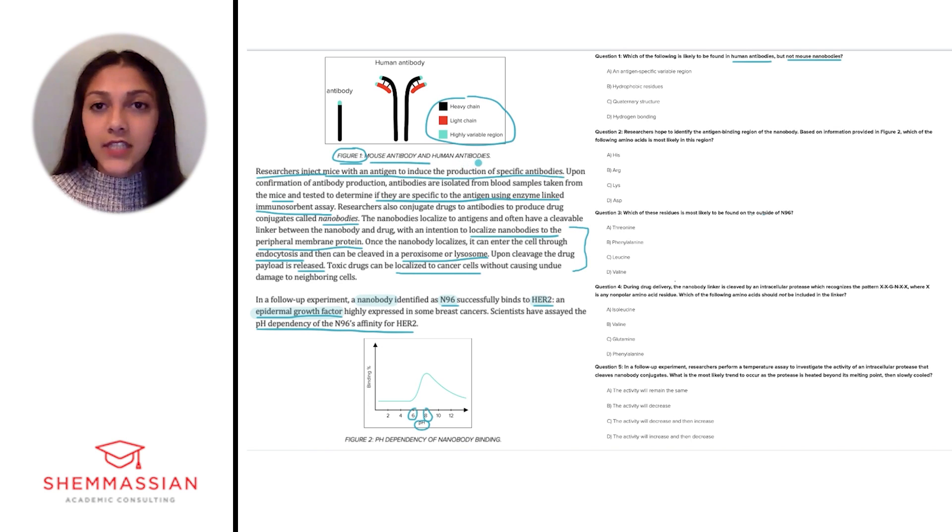We see that mouse antibodies are composed of a single protein domain, and these single units have to be functional on their own. So we can assume that they wouldn't require any sort of quaternary structure. On the other hand, both mouse antibodies and human antibodies would need to have some sort of antigen-specific variable regions, as we can see shown in the figure.